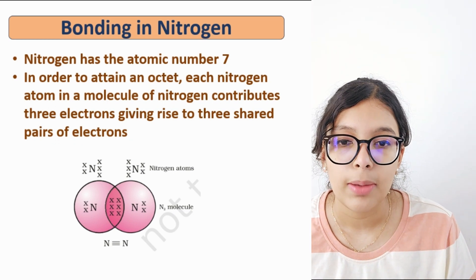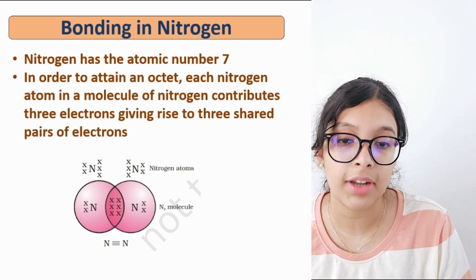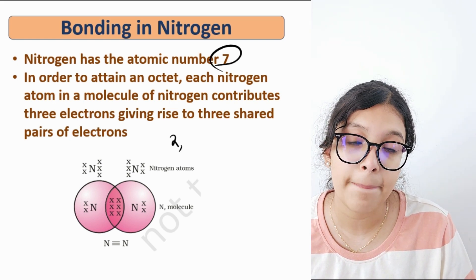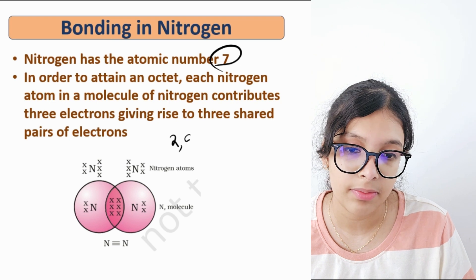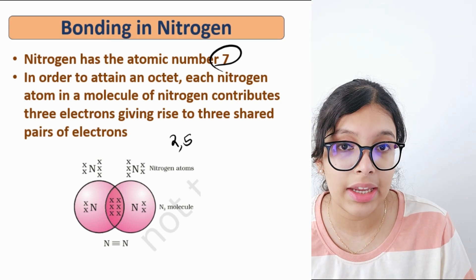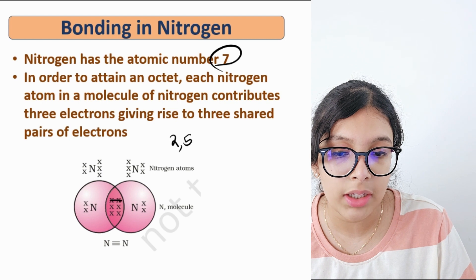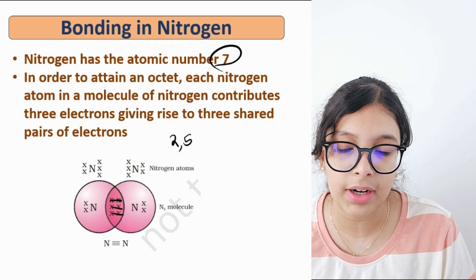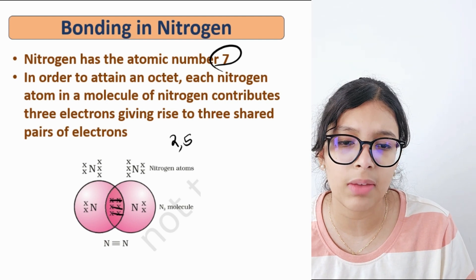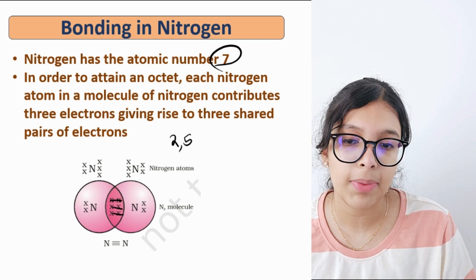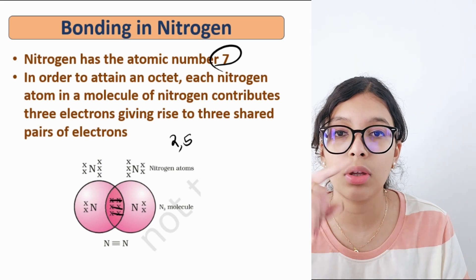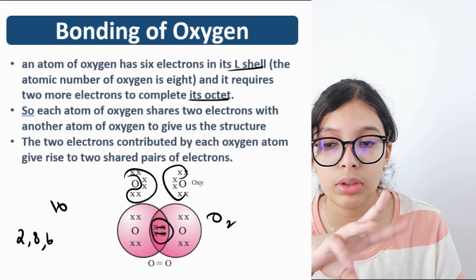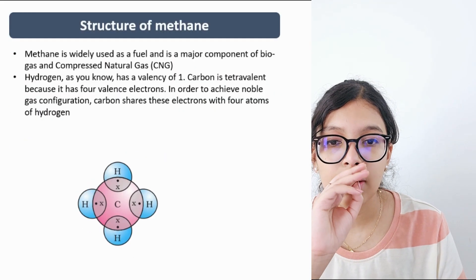In nitrogen, the atomic number is 7, so the electronic configuration is 2, 5 — meaning nitrogen needs three electrons. It forms a triple bond: each nitrogen atom contributes three electrons, giving rise to three shared pairs of electrons. So hydrogen forms one bond, oxygen two bonds, and nitrogen forms three bonds.